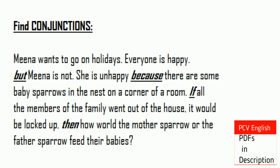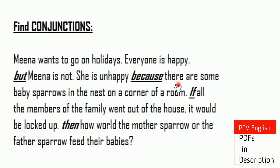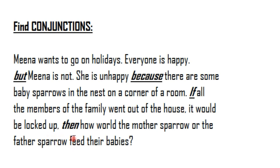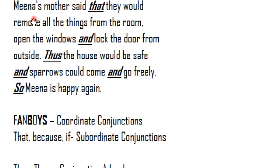Now we identify conjunctions in the passage. Subordinate Conjunctions include: 'but,' 'because,' 'if.' 'But' can be a Coordinating Conjunction or Subordinating Conjunction. 'Meena's mother said that...' — here 'that' is a Subordinating Conjunction.